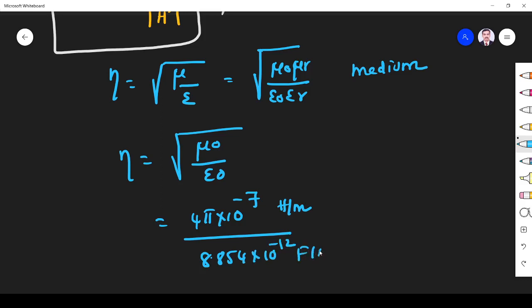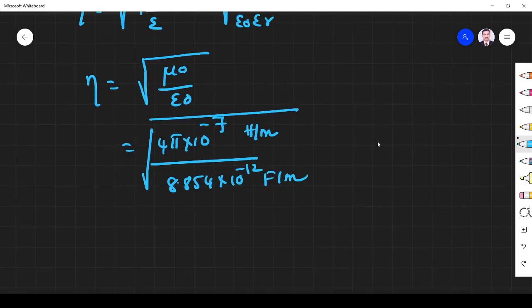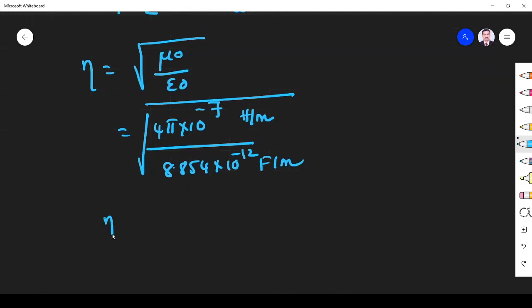If you simplify this, you get eta equals 377 ohm or 120 pi. This is the intrinsic impedance of free space.